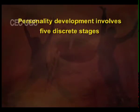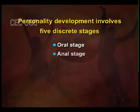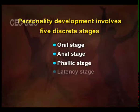To Freud, personality development takes place in five discrete stages: firstly, the oral stage, anal stage, phallic stage, latency stage, and finally, the genital stage.